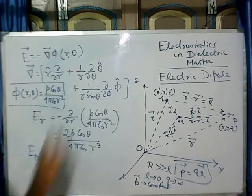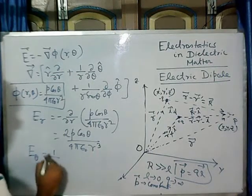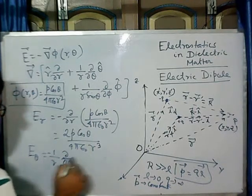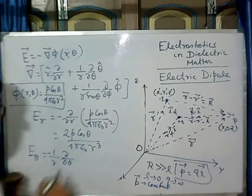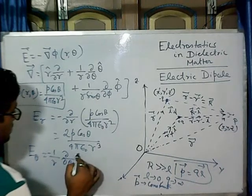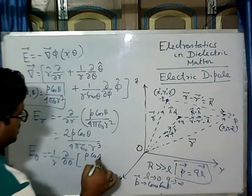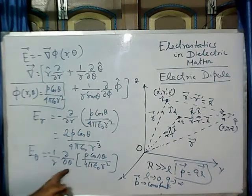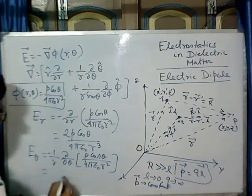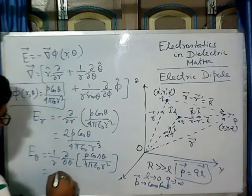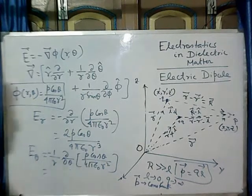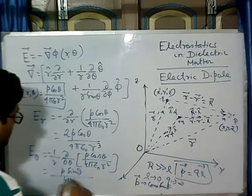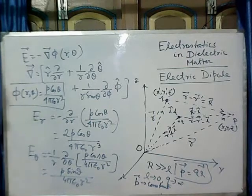And E_theta will be: minus 1 by R times del/del theta of phi, which is minus 1 by R times del/del theta of P cos theta divided by 4π epsilon naught R squared. If we operate del/del theta here, cos theta becomes minus sin theta, so again a positive term comes out: E_theta equals P sin theta by 4π epsilon naught R squared.